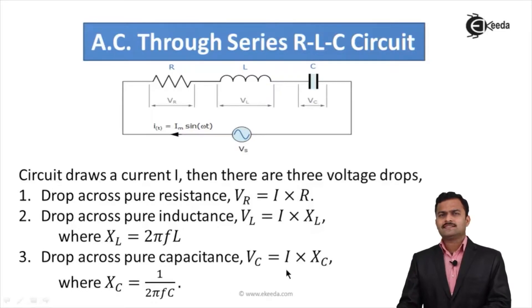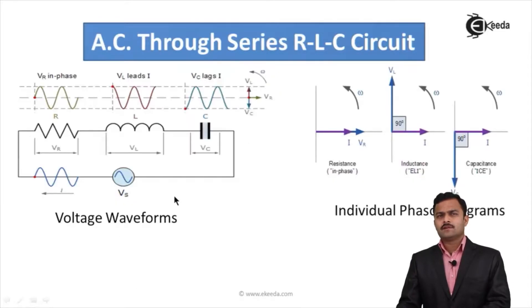In next slide I will draw the individual voltage waveforms and individual phasor diagrams. If this is a sinusoidal quantity starting from zero, across resistance it will be same as the current which is given as Im sin omega t. Here corresponding phasor diagram V and I are in phase.